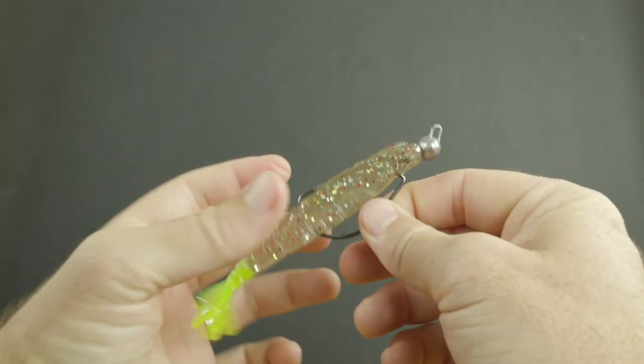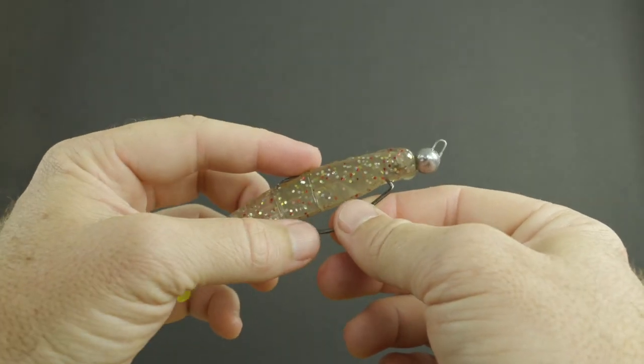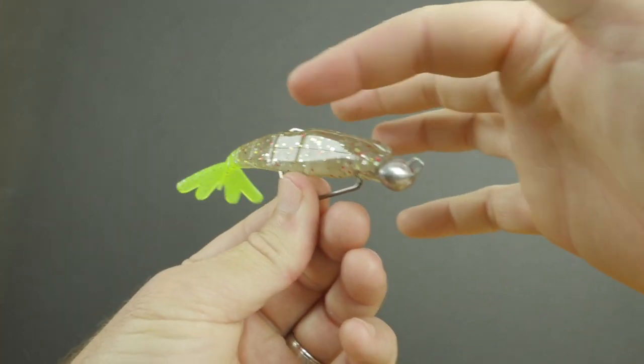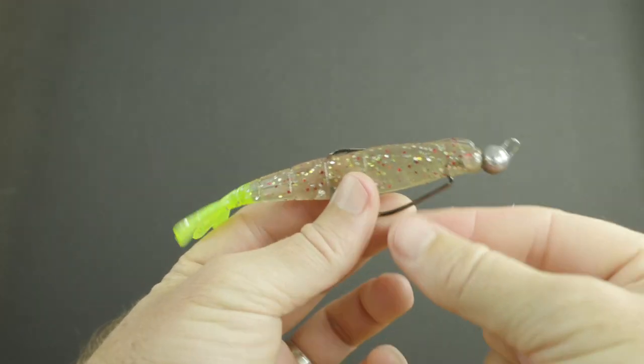And once that fish strikes we've got them. And if you want to get super weedless, it's called skin hooking. So you get the point of the hook and you put it into the plastic, and now this thing is super weedless. And as mentioned before, as soon as the fish strikes, hook point's exposed and now you can get your hook set.